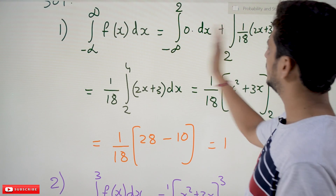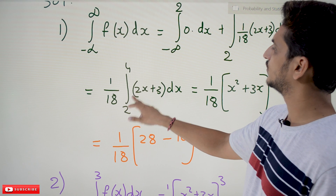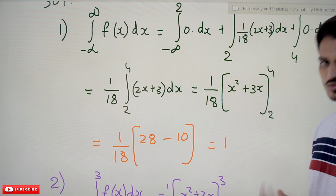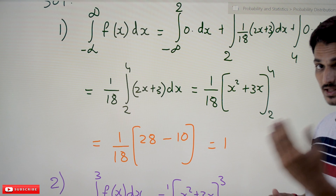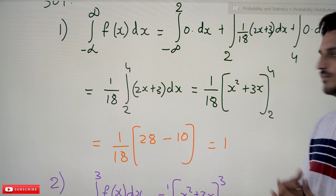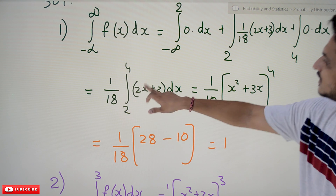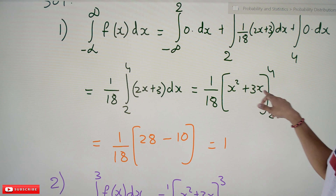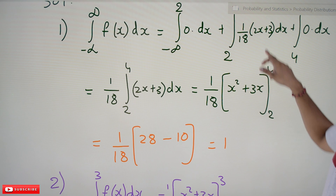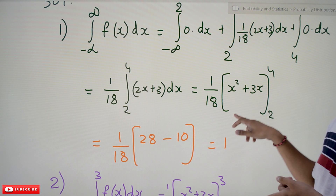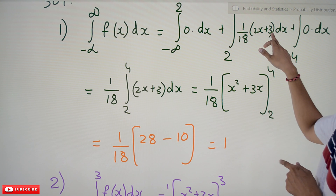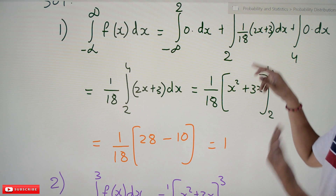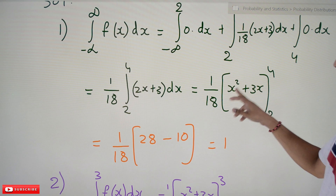We have (1/18) times the integral from 2 to 4 of (2x + 3) dx. Using basic integration, the integral of (2x + 3) dx gives x² + 3x — because differentiating x² gives 2x, and differentiating 3x gives 3.